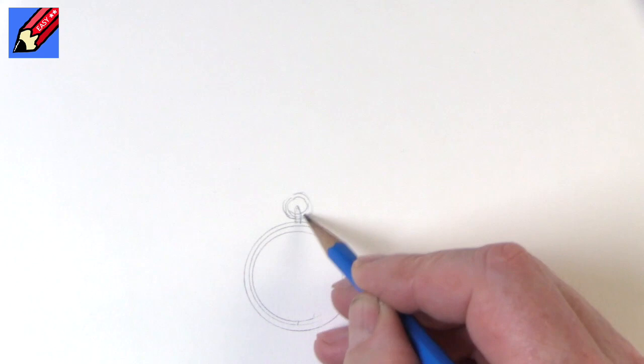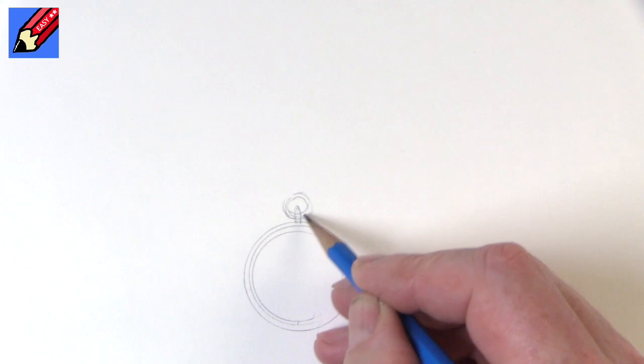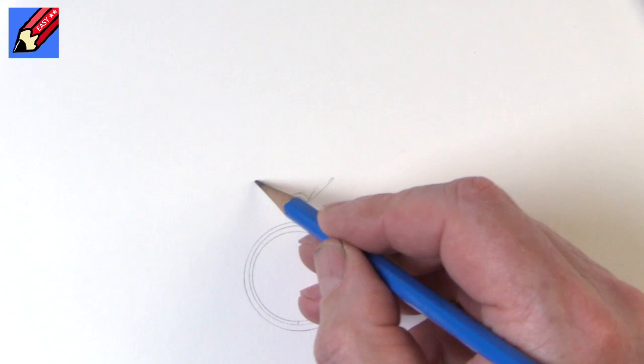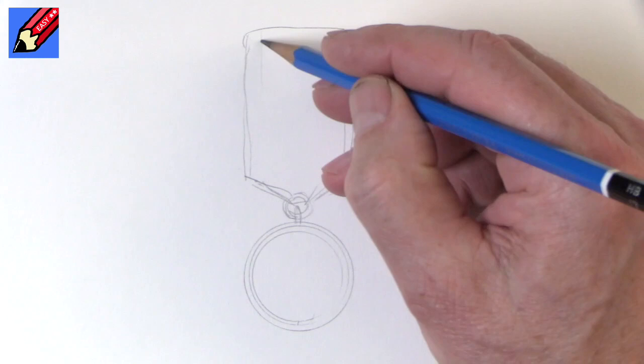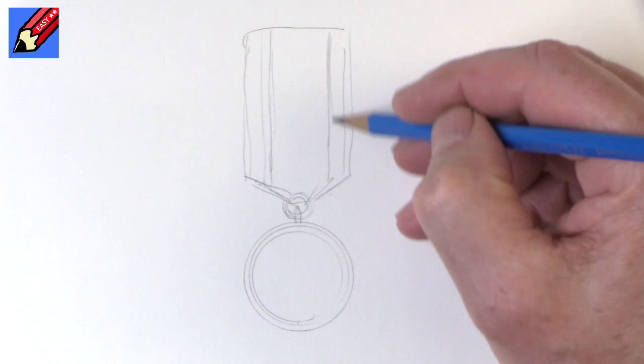That holds a ring, so we can draw this kind of ring coming through there and then we'll have the ribbon round about there and that's going to come up about like that. The ribbon's going to have kind of two stripes down there like that and then we can start drawing in ink.